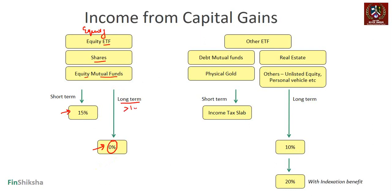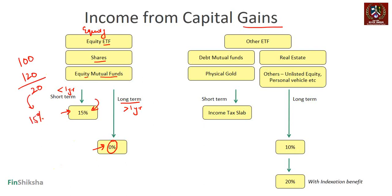For equities, long term is defined as greater than one year; short term is less than one year. Short-term capital gain on equities is taxed at 15%. For example, if you buy an instrument at 100 and sell it at 120, the gain is 20. If this gain is short-term, you pay 15% on 20. With cess added, it becomes approximately 15.45%, but for practical purposes we use 15%.